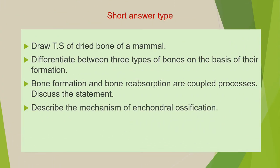The second category of questions are short answer type questions which you have to answer in a single paragraph. The first question is: draw TS of dried bone of a mammal — just draw the neat diagram and properly label it. Second: differentiate between three types of bones on the basis of their formation. Next: bone formation and bone resorption are coupled processes — discuss the statement. And the last question is: describe the mechanism of endochondral ossification.